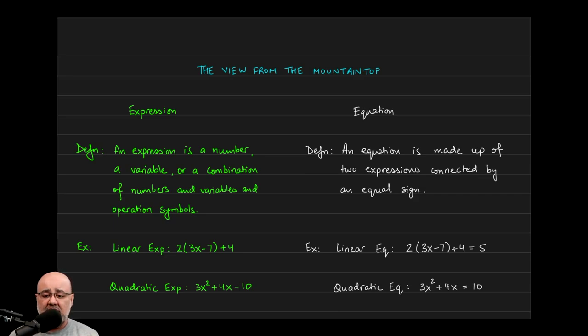An equation by contrast is something that is made up of two expressions connected by an equal sign. The important part is the presence of the equal sign. Here for an expression, we don't see any mention of equal anywhere. All we see are operation symbols, meaning addition, subtraction,